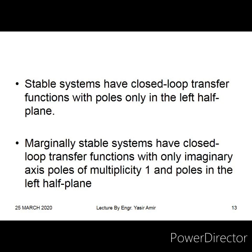Marginally stable systems are those whose poles have a multiplicity of one. When we have two poles at +2j and two poles at -2j (multiplicity of two), the system is regarded as unstable, although the poles are on the j-omega axis. This is a point you must keep in your mind, because when you give any input to this kind of system, the output will be unbounded.